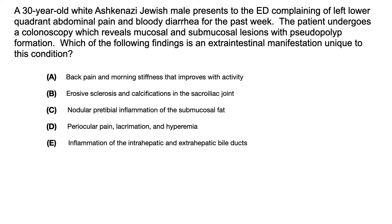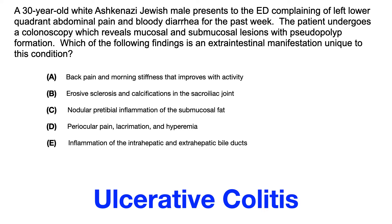Let's go through this practice question and look at the vignette to see what you needed to pick out in order to determine what condition this question was alluding to. We have an Ashkenazi Jewish male complaining of left lower quadrant abdominal pain and bloody diarrhea. The colonoscopy shows mucosal and submucosal lesions with pseudopolyp formation. What we're talking about here is ulcerative colitis.